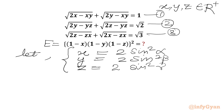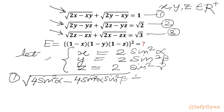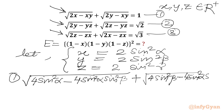Now we are going to plug in x, y, z values into equation 1, equation 2, equation 3. Beginning with equation 1: √(2x − xy) gives us √(4 sin²α − 4 sin²α sin²β) plus √(2y), which is √(4 sin²β − 4 sin²α sin²β), equal to 1.